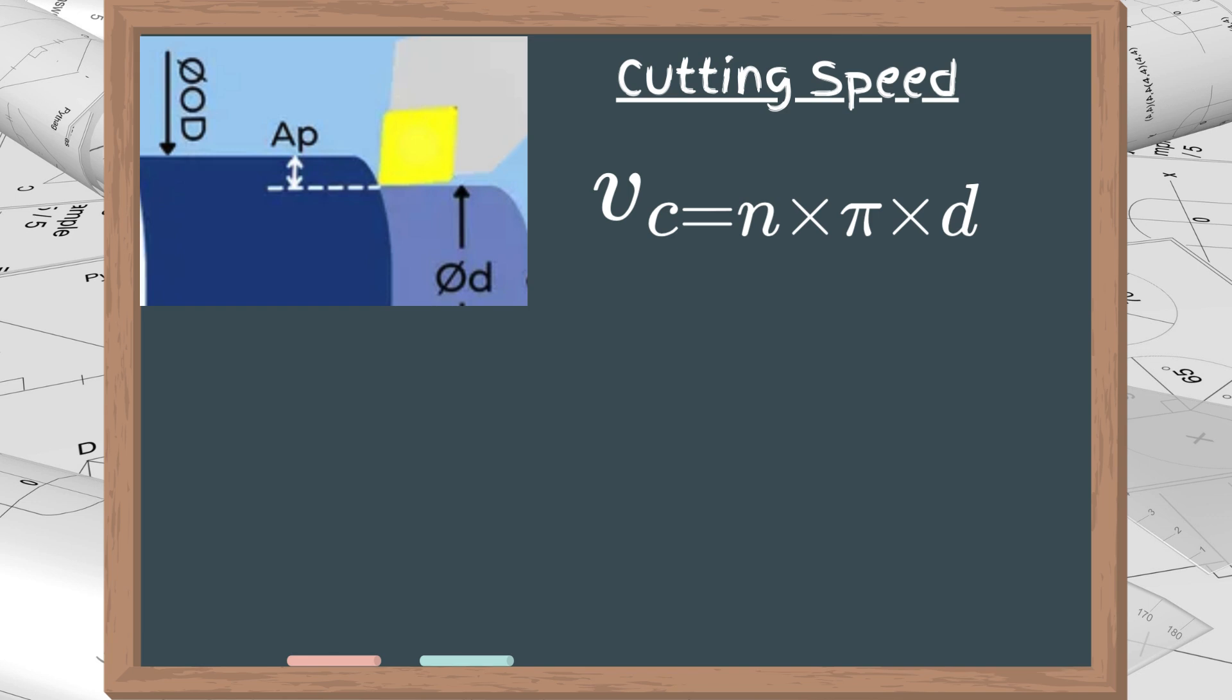Pay attention to the words insert's tip. In external turning, the diameter you need to use in the formula is smaller than the workpiece diameter: d equals the OD minus 2 times the depth of cut. But in internal turning, it is the opposite: d equals the ID plus 2 times the depth of cut.